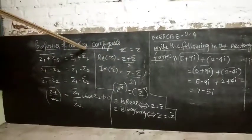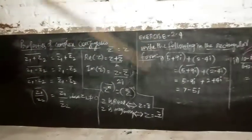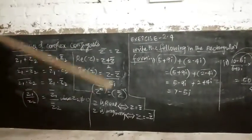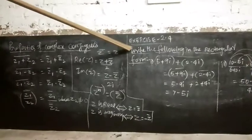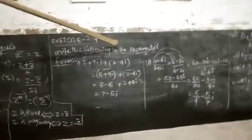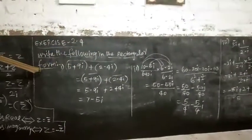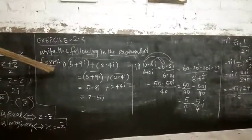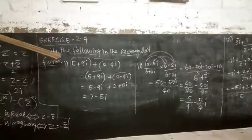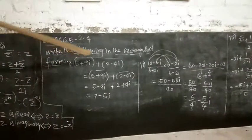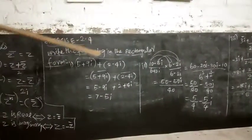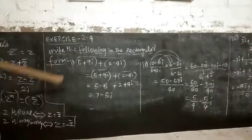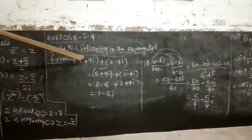Next: z is purely imaginary if and only if z equals minus z bar. So those are the properties of complex conjugates. Now solving the next exercise. The first problem: write the following in rectangular form, i.e., in x plus iy format — the complex number format.